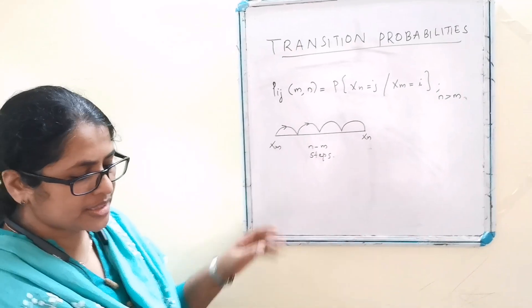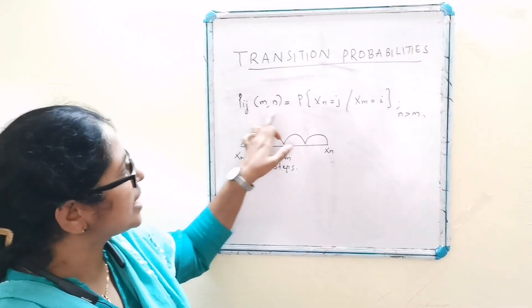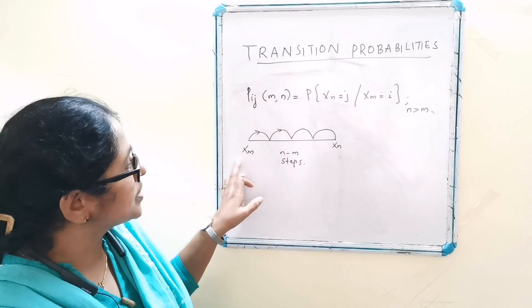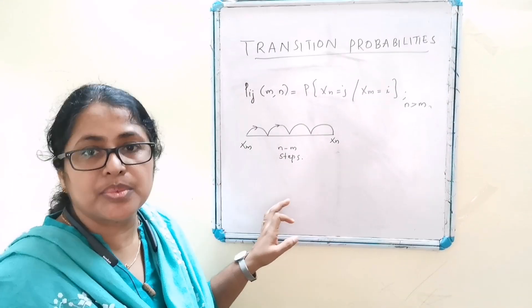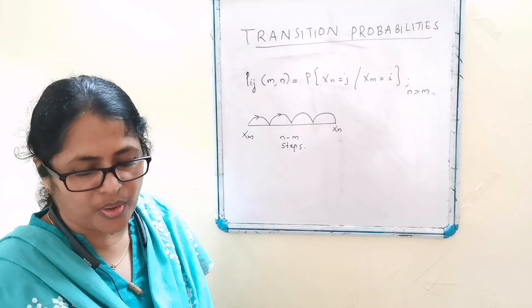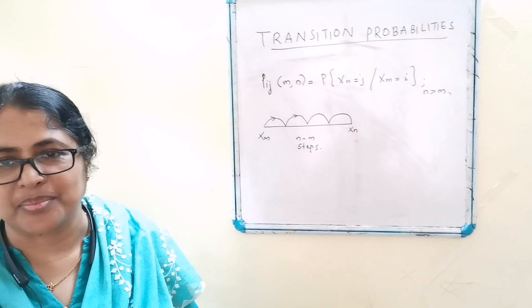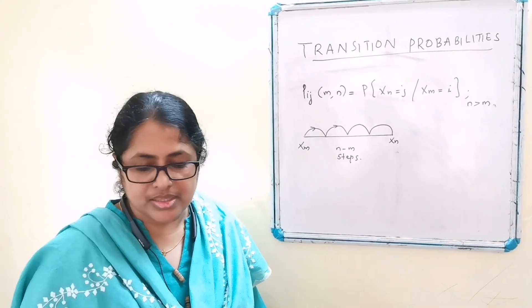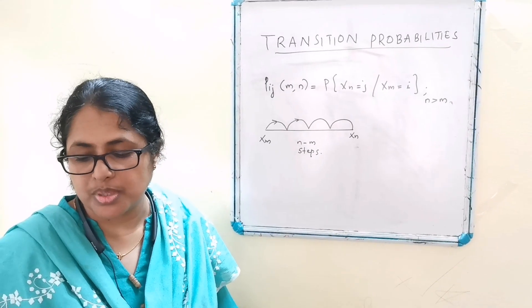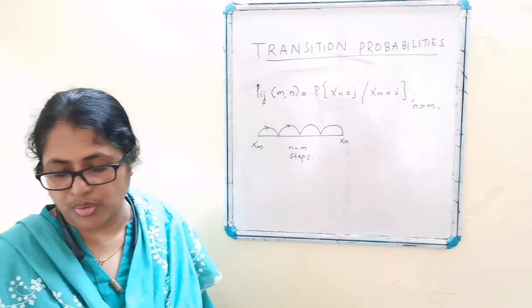If the transition probabilities pij(m,n) depends only on the state i and j and the time difference n minus m, irrespective of the particular time points n and m, then the chain is called a Markov chain with stationary transition probabilities or a homogeneous Markov chain.